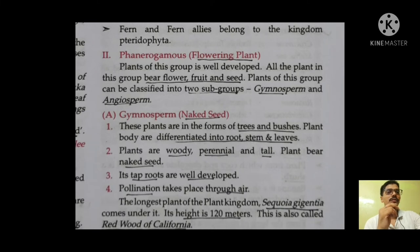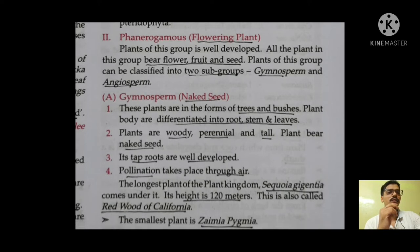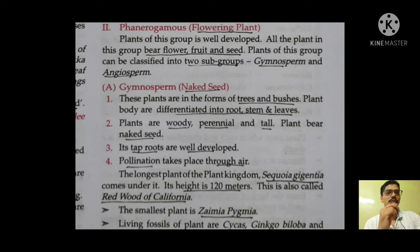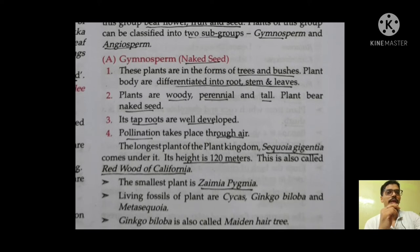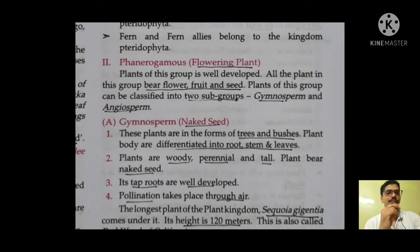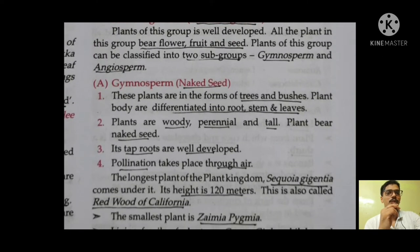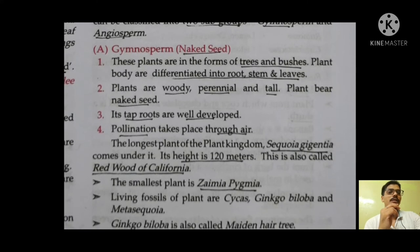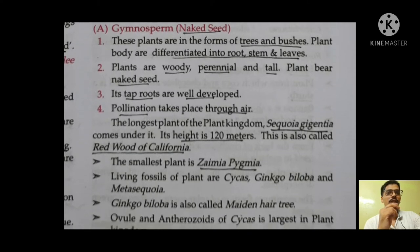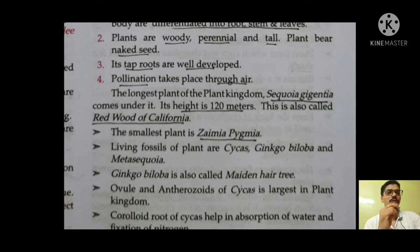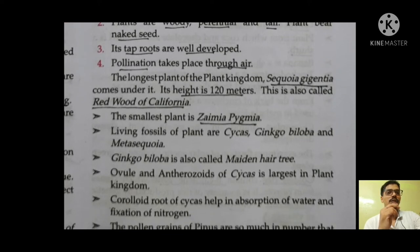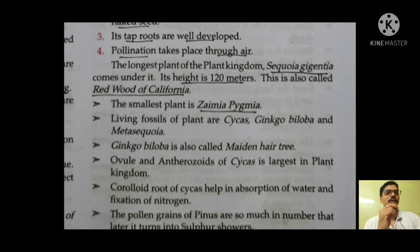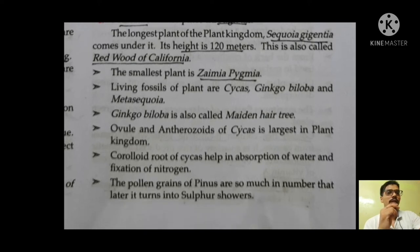Next is phanerogams — these are the flowering plants of the plant kingdom. All plants in this group bear fruit, flower, and seed. It is subdivided into gymnosperm and angiosperm. Gymnosperm means naked seed and angiosperm means covered seed. Gymnosperms are plants in the form of trees and bushes, differentiated into roots, stem, and leaves. Plants are woody, perennial, and tall, bearing naked seeds, with well-developed tap roots, and pollination takes place through air. Sequoia gigantea, at 120 meters, is the tallest plant of the plant kingdom, also called the redwood of California. The smallest plant is Zamia pygmaea.